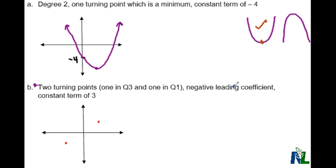It says I have a negative leading coefficient. So if it's a negative cubic, that means it's going to look something like this.